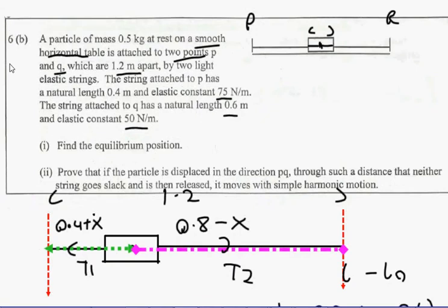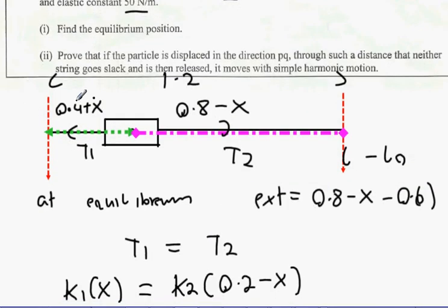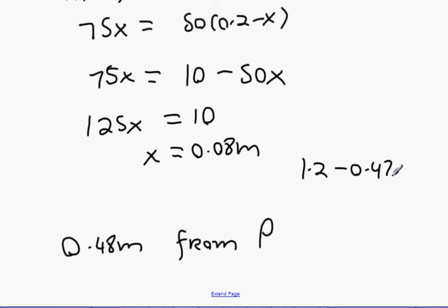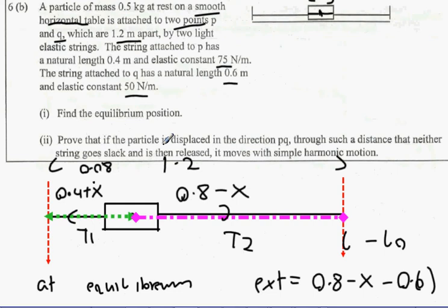The question says find the equilibrium position. 0.4 plus 0.08 is 0.48. So 0.08 meters from P. Or alternately 1.2 minus 0.48, which is 0.72 from Q.